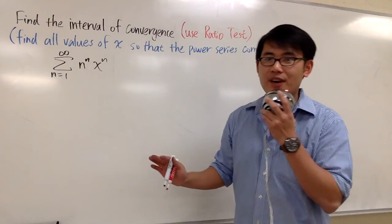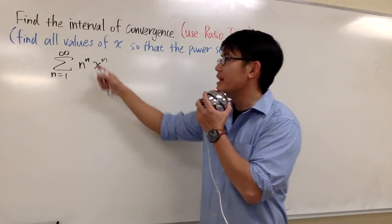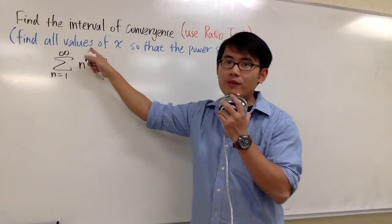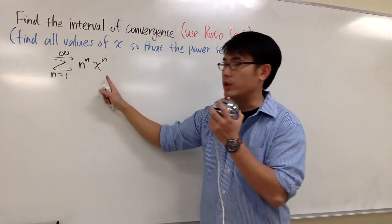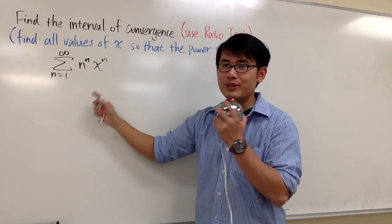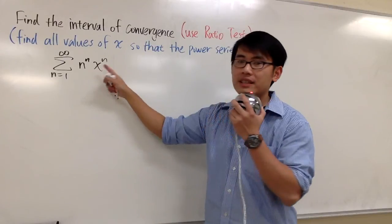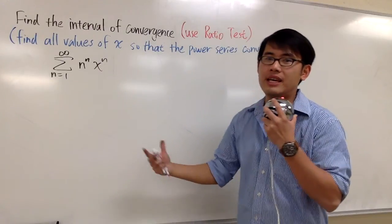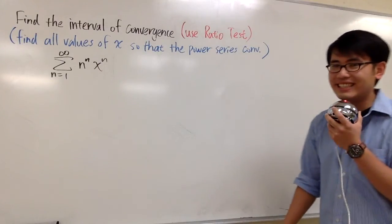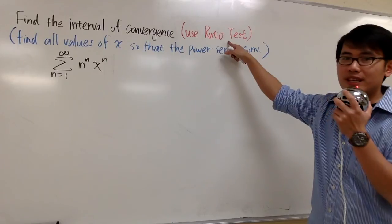We are going to find the interval of convergence for this power series — we are going to find out for what value of x will this power series converge. So what value of x can I plug in and produce a convergent series? We will use the ratio test.